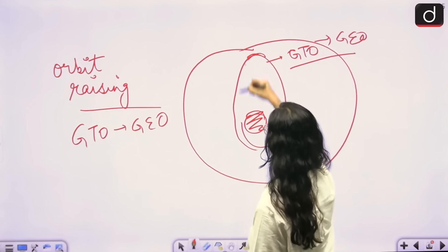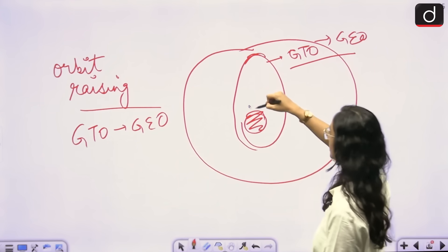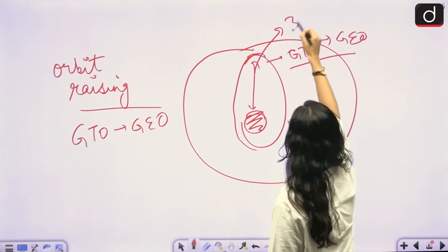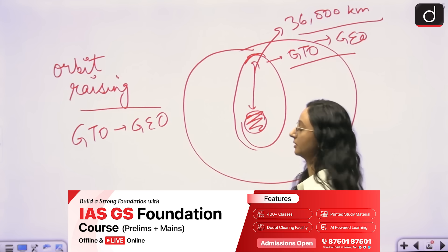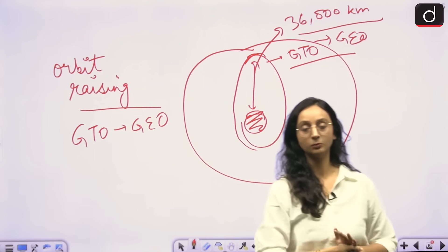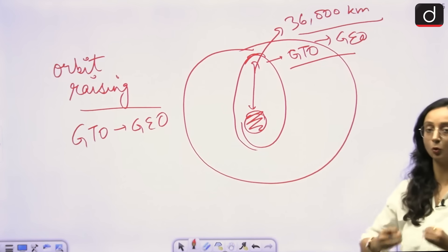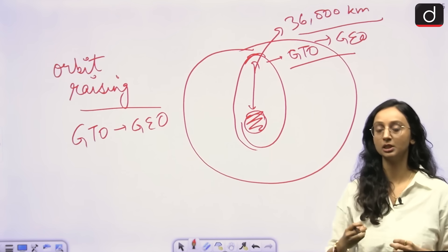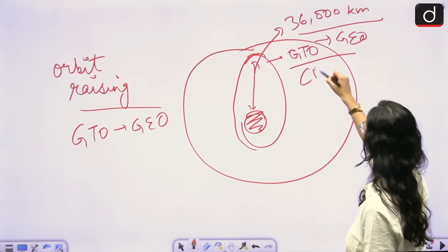At the farthest point from the Earth, GEO and GTO are going to overlap because the distance over here is somewhere around 36,000 kilometers. So any satellite will first have to reach GTO, then orbit raising is going to happen because the satellite is going to use its own propulsion systems, and from GTO it is going to move to GEO. Right now, our CMS-03 is here.